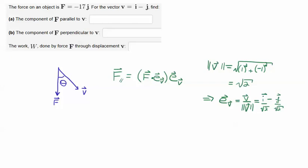So recall that the projection of F along V is F parallel. Well, it's this dot product, so it's F dotted with the unit vector in the V direction.